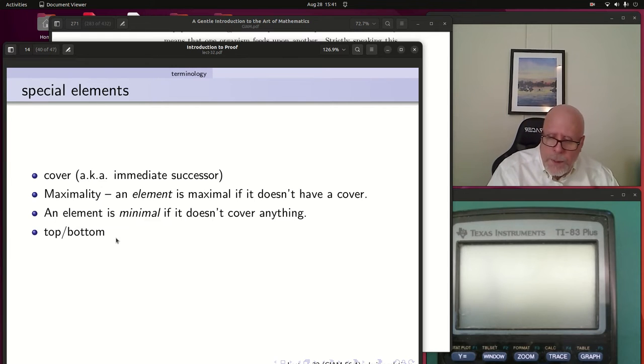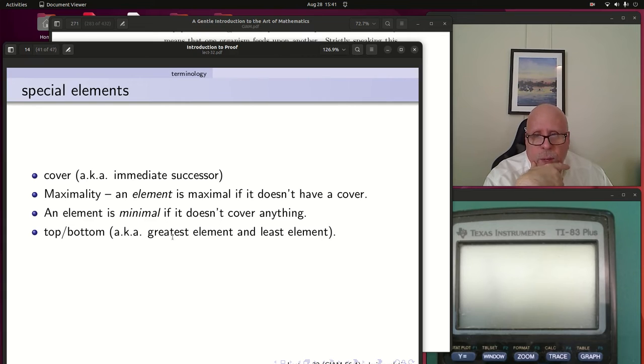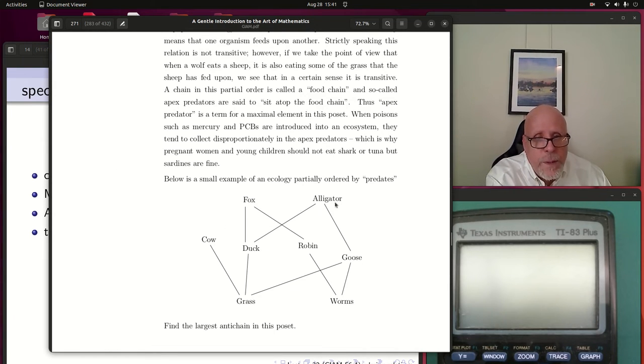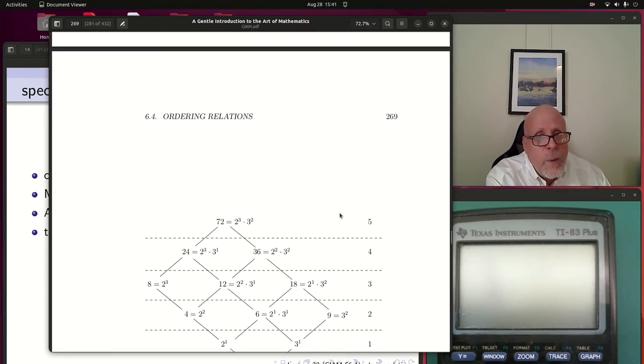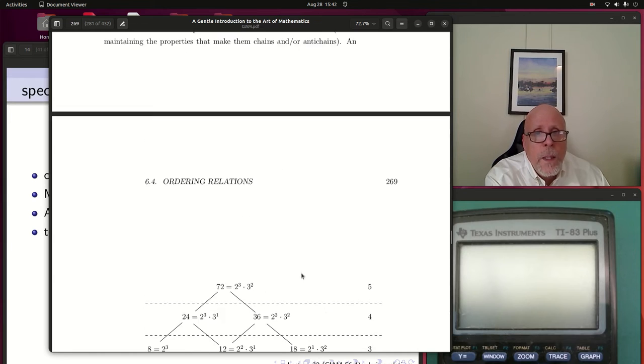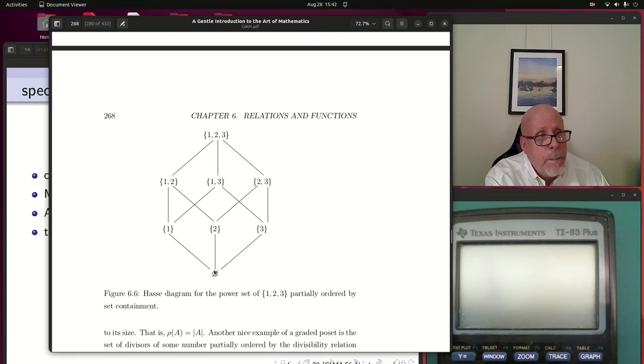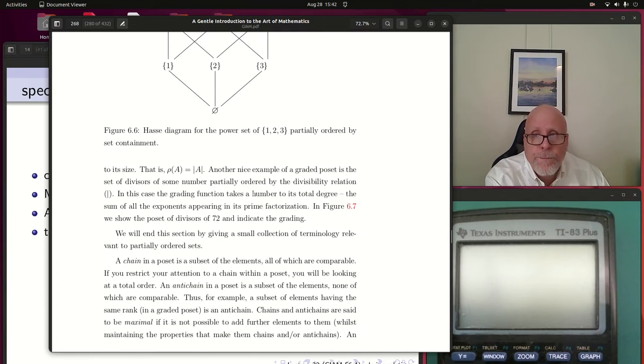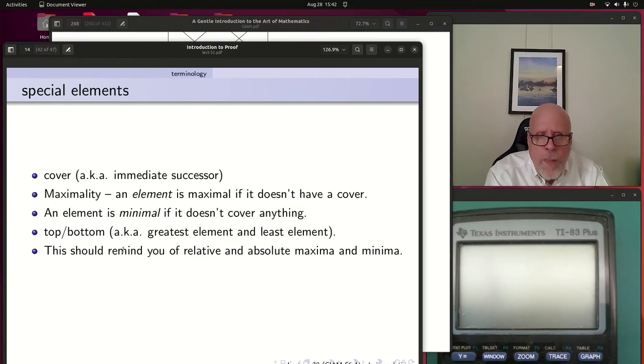What's a top and what's a bottom? You may not have these. If you have a single greatest element, that's called the top of the poset. In predation, there isn't one. There's two different maximal elements. In the divisors of 72, ordered by divisibility, there's a top, 72, and there's a bottom, one. In the subsets, ordered by inclusion, the empty set is the bottom and the entire set is the top. The top and the bottom are like absolute. The other things, maximal elements, they're like relative minima or maxima.